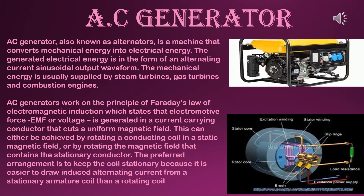AC generators work on the principle of Faraday's law of electromagnetic induction, which states that electromotive force EMF or voltage is generated in a current carrying conductor that cuts a uniform magnetic field. This can either be achieved by rotating a conducting coil in a static magnetic field or by rotating the magnetic field that contains the stationary conductor. The preferred arrangement is to keep the coil stationary because it is easier to draw induced alternating current from a stationary armature coil than a rotating coil.